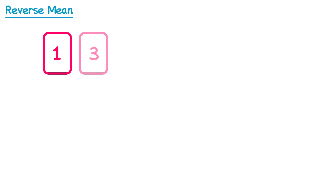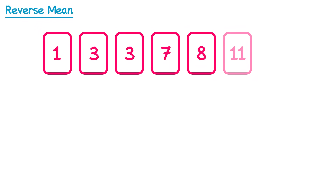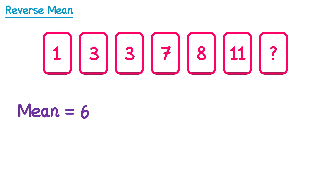Let's try another example of this. In this example we're going to have the numbers 1, 3, 3, 7, 8, 11, and an unknown number at the end. We're told in the question that the mean of these numbers is 6, and we need to work out the missing number.